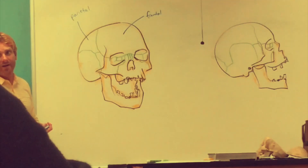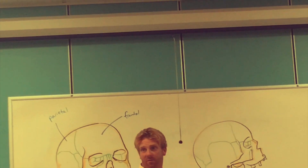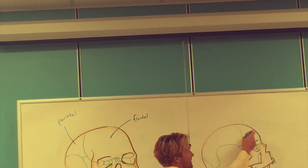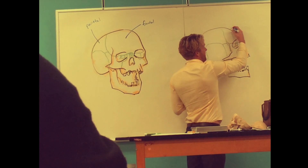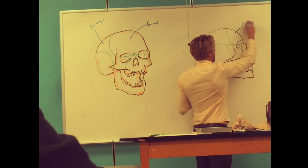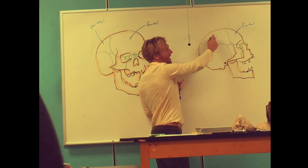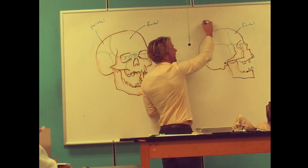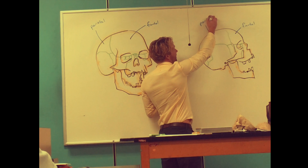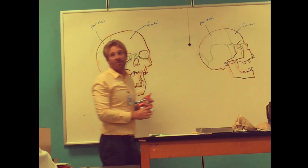Now that we know that frontal has to be beside parietal, if we go over to this lateral view, we can use that same type of rationale. That's got to be the frontal, which means that the one right beside it has to be the parietal. And you can really see how large that parietal bone is from that view.